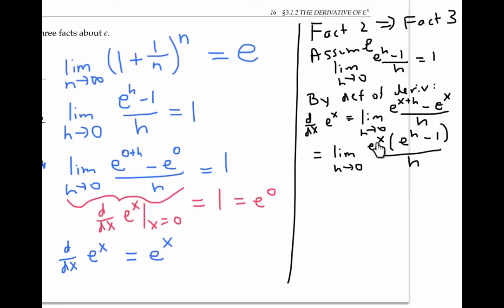Now e to the x has nothing to do with h. So it's just a constant as far as h is concerned. And I can pull it all the way out of the limit sign and rewrite this limit. Now by fact 2, which I'm assuming, this limit here is just 1, which means that my derivative is e to the x, just like I wanted to show.